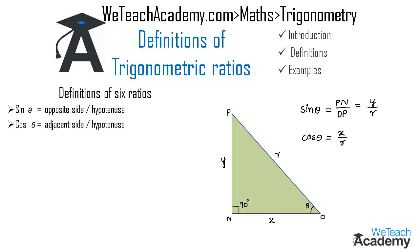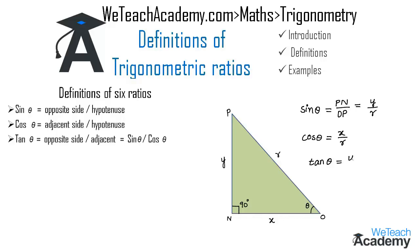Next is tan theta. Tan theta is opposite side by adjacent side, or equivalently sine theta by cos theta. The opposite side is NP, that is y, and the adjacent side is ON, that is x. So we get tan theta equals y by x.